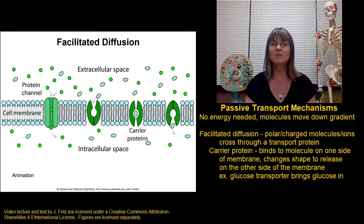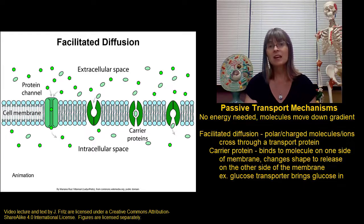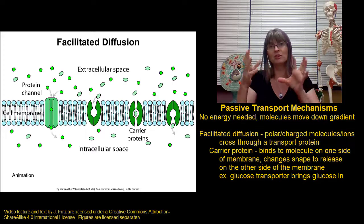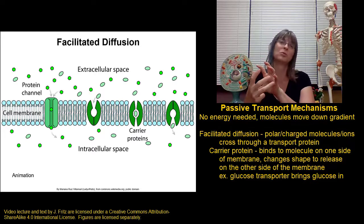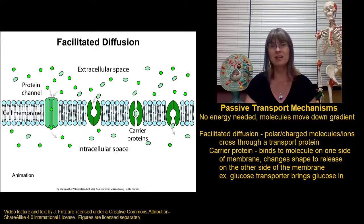Carrier proteins tend to be very specific. What that means is that each carrier protein is only going to be able to transport a certain type of molecule. The carrier protein that can transport glucose is not going to be able to transport amino acids. It might not even be able to transport fructose. And that's because a carrier protein has to be just the right shape to bind to the molecule it's transporting. If it's a different shaped molecule, it's not going to work in the carrier protein.